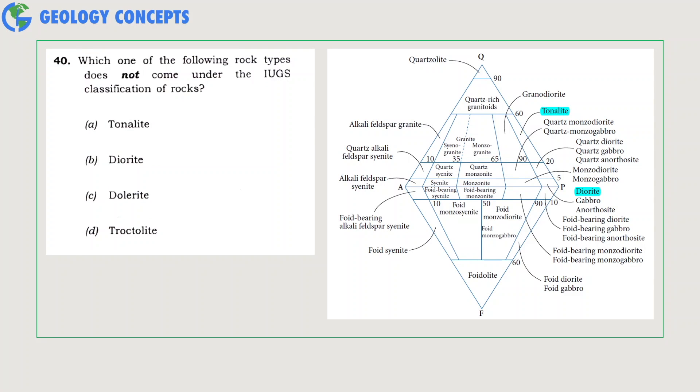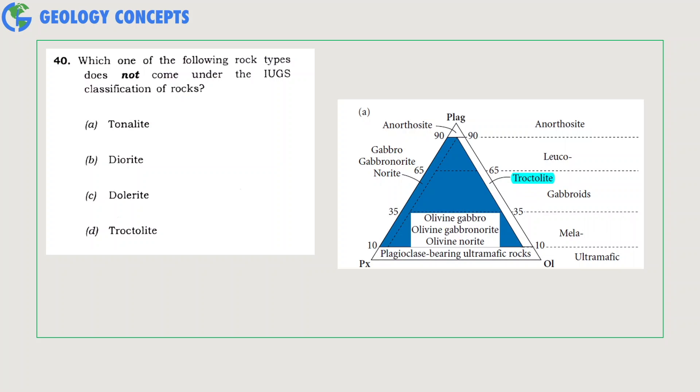Next question: which one of the following rock types does not come under the IUGS classification of rocks? Tonalite and diorite are represented in the QAPF diagram, whereas troctolite is represented in a plagioclase-pyroxene-olivine triangular plot in the IUGS system. Dolerite is not represented through any of the IUGS classification. Hence, option C dolerite is the correct answer.